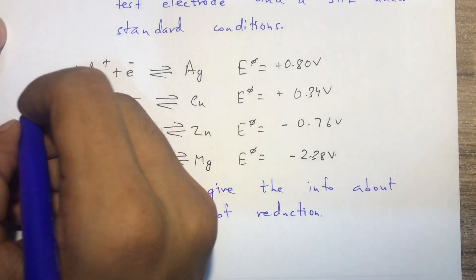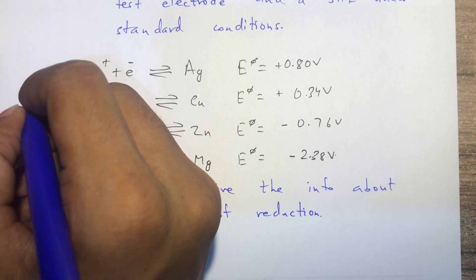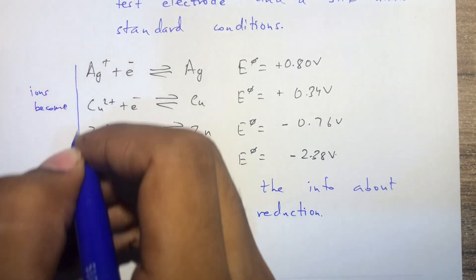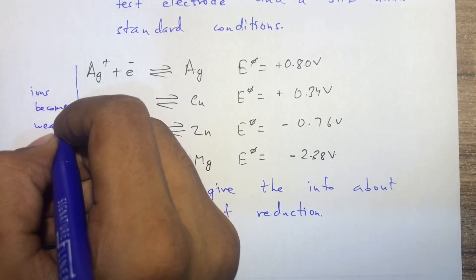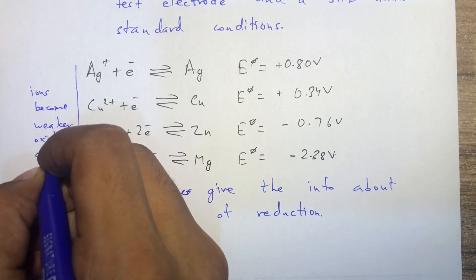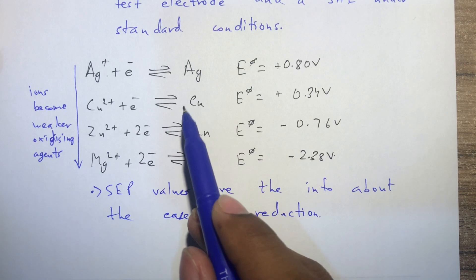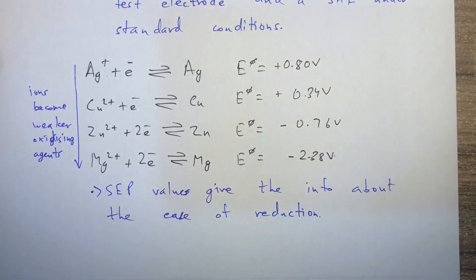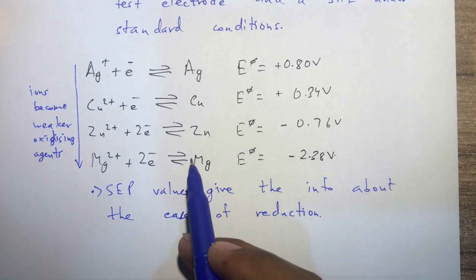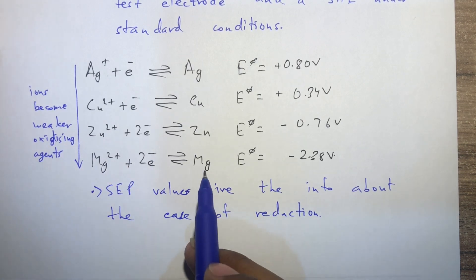In this direction, the reducing power decreases and the ions become weaker oxidizing agents. Now, looking at the backward reaction - which is an oxidation reaction because there is a loss of electrons - if the SCP value is more negative, then this reaction is more favorable. So magnesium is a strong reducing agent.